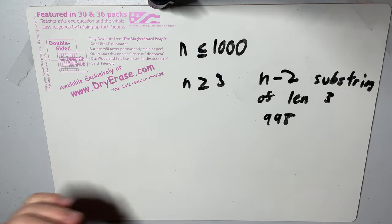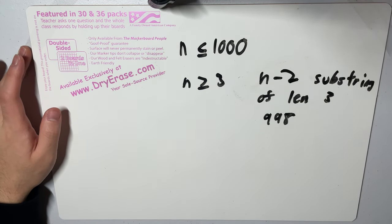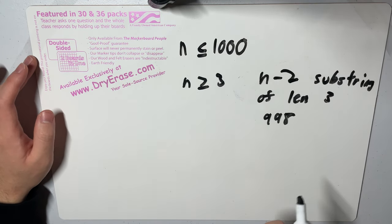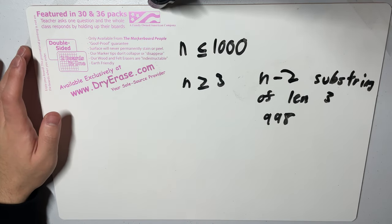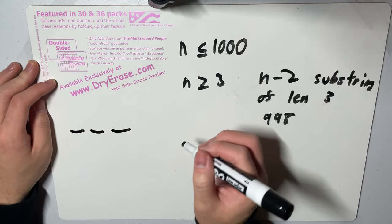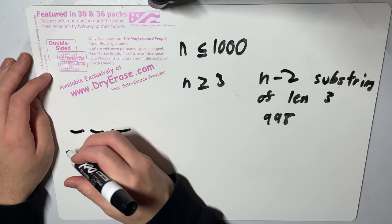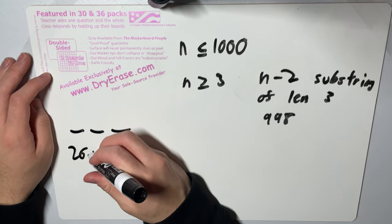Now let's try to consider how many total possible strings exist of length three. So if we imagine this is an arbitrary string of length three, we have 26 options for the first character, 26 choices for the next character...